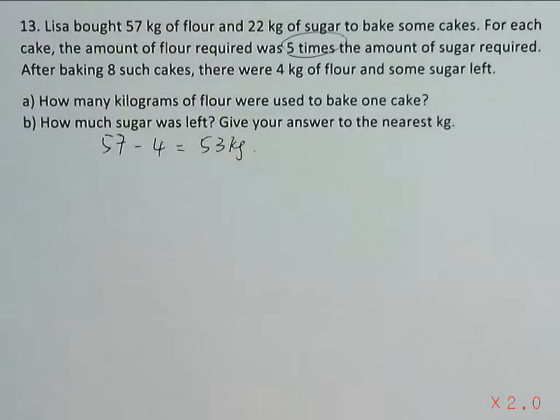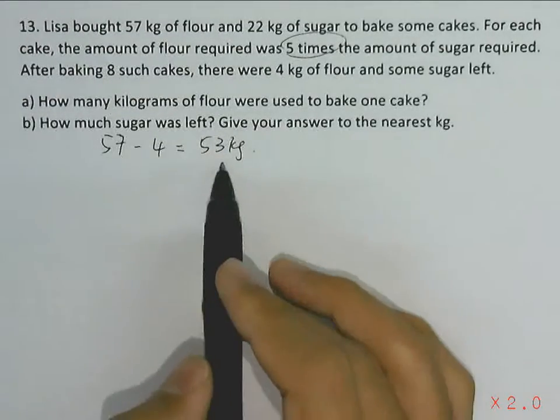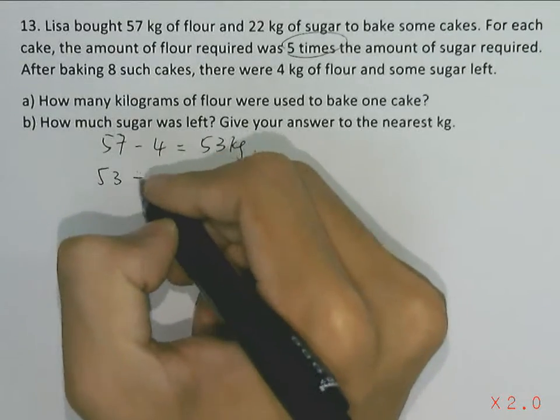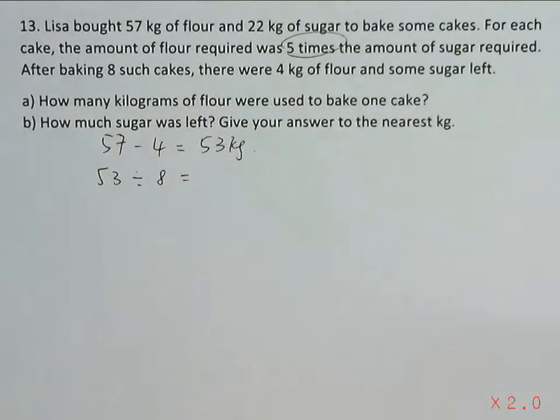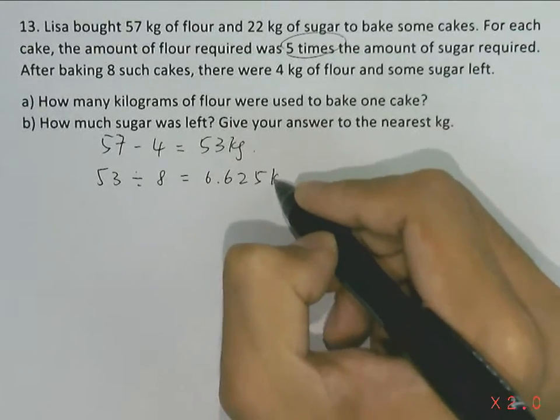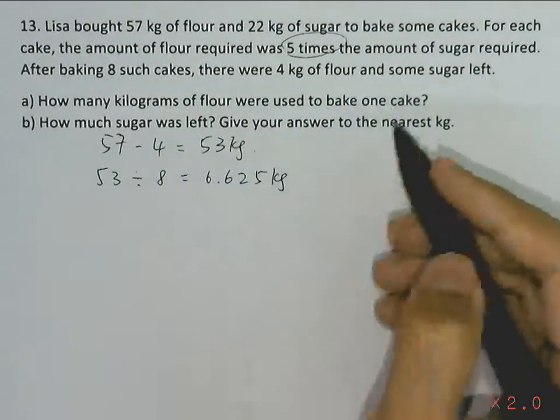If eight cakes took 53 kilograms, then one cake will be 53 kilograms divided by eight. That gives us the answer for part (a), which is 6.625 kilograms of flour per cake.